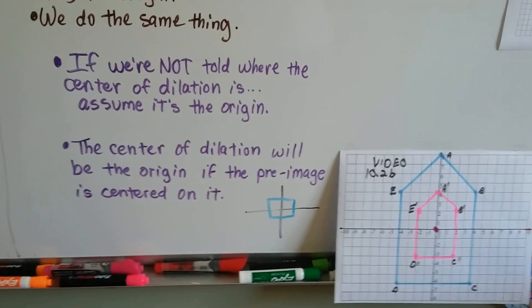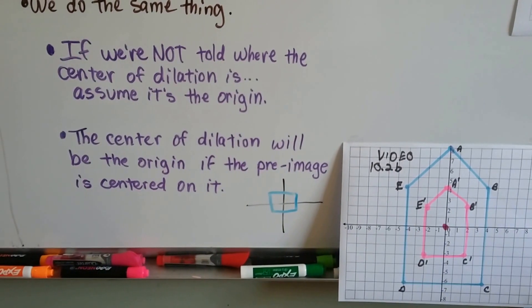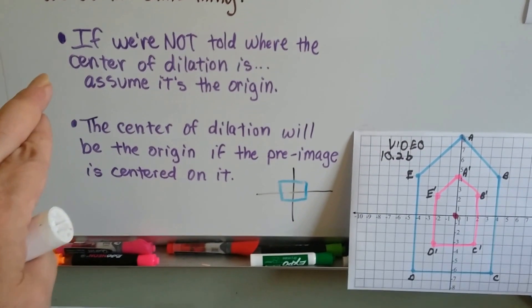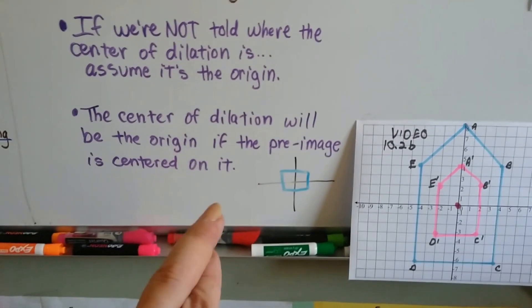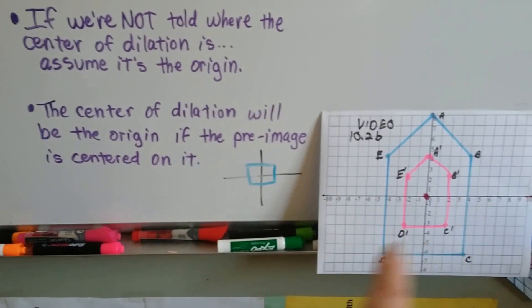If we're not told where the center of dilation is, we just assume it's the origin. Whether it's inside or outside, we just assume it's the origin when we're not told where it is. And the center of dilation will be the origin if the preimage is centered around it.